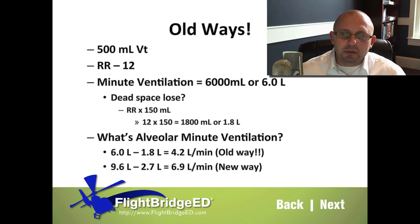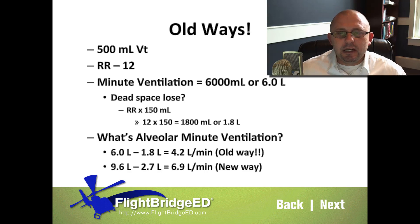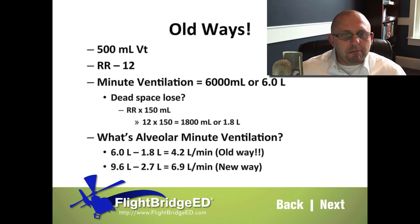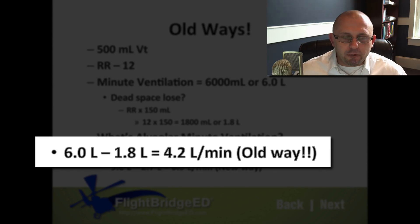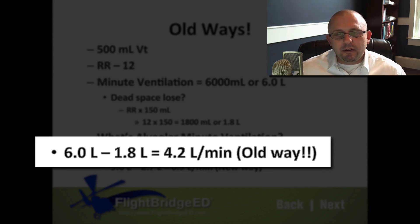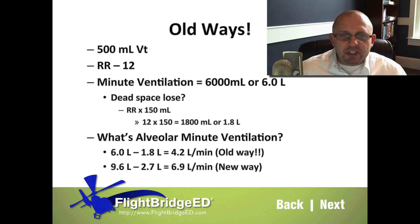We're not getting 6,000 mils to the alveolar level for gas exchange. We take the 6,000 mils and subtract the dead space loss of 1.8 liters, giving us an alveolar minute ventilation of only 4.2 liters per minute. We're still in the four to eight liter range, but we have to consider that we're not talking about a patient in normal homeostasis.